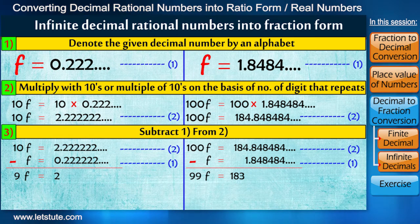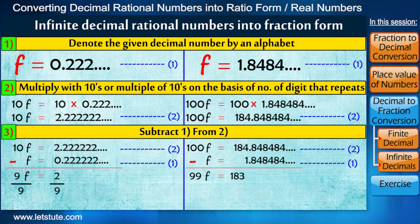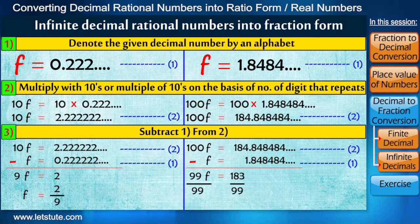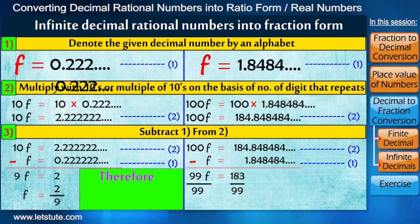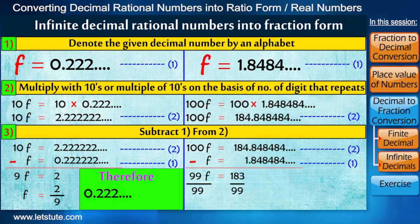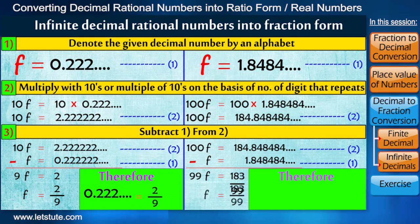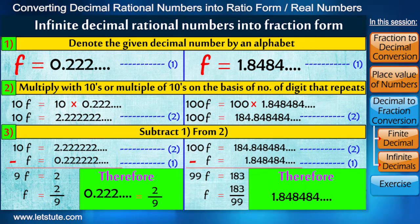We now divide both the sides by 9 and here by 99. So we have got the fraction 2 upon 9. This means the decimal number 0.222 is equivalent to the fraction 2 upon 9, and 1.848484 is equal to the fraction 183 upon 99.